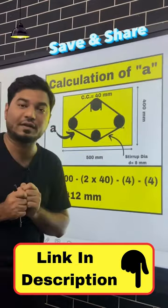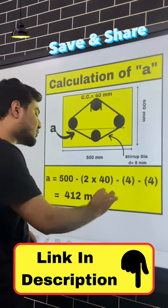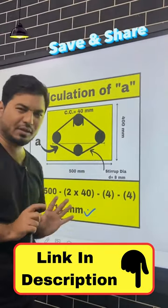First, you have to find out horizontal center to center distance from centerline of the stirrup. Then you have to find 412 mm. We have to use both clear cover and minus, and you have to use diamond. It's very simple.